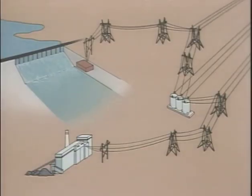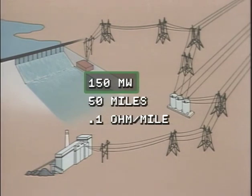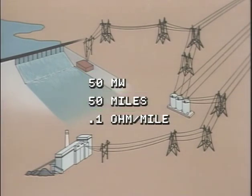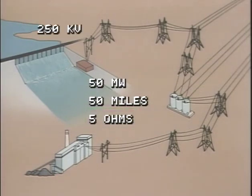This illustration represents our two transmission systems. Each power plant generates 150 megawatts of power. For simplicity, we'll consider one specific point in time when the power in each phase is 50 megawatts. Both systems run for 50 miles and each phase has a resistance of 0.1 ohm per mile, which totals 5 ohms of resistance per phase. One system has an applied voltage of 250 kilovolts and the other has an applied voltage of 500 kilovolts.